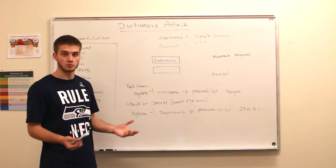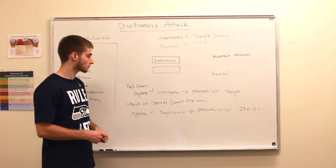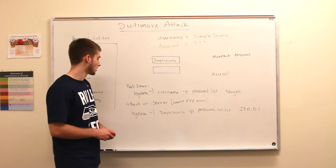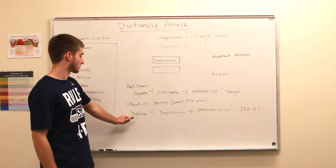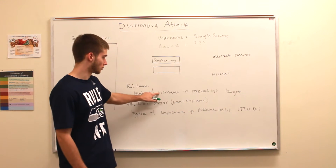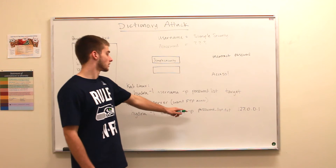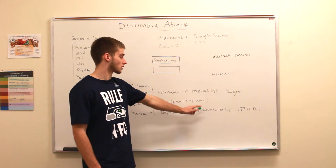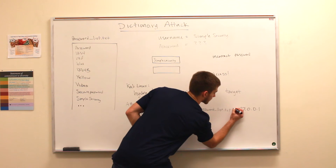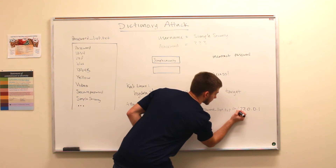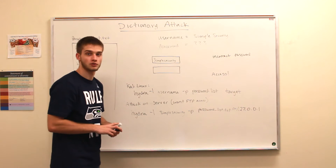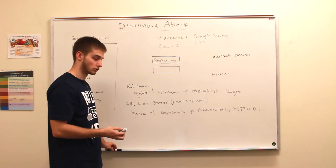If we want to get FTP access to a server — we're just going to use a loopback for this example — we're going to call the command: Hydra -l simple_security, so the username simple security, -P the password list, and then FTP 127.0.0.1, which is the machine's loopback IP address.